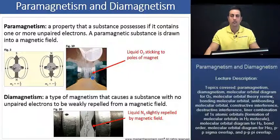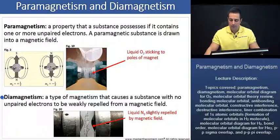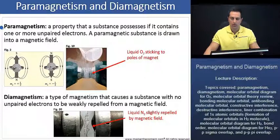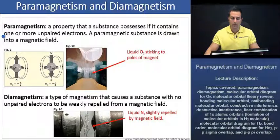Let's take a moment and read our definitions. Diamagnetism is a type of magnetism that causes a substance with no unpaired electrons to be weakly repelled from a magnetic field. Whereas paramagnetism is a property that a substance possesses if it contains one or more unpaired electrons — a paramagnetic substance is drawn into a magnetic field.